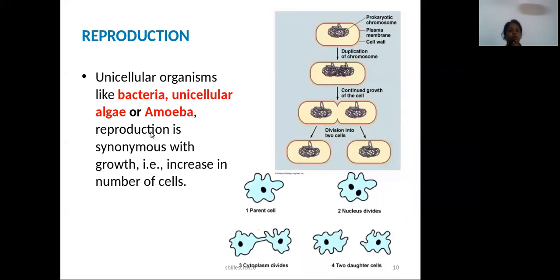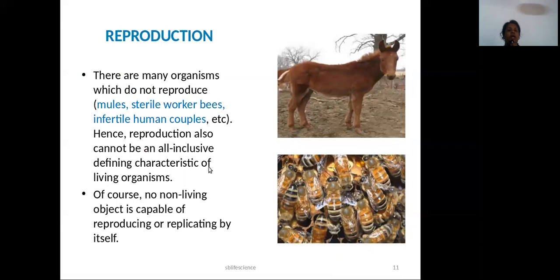Reproduction and growth are related. In unicellular organisms, there is an increase in the number of cells. Growth and reproduction overlap in unicellular organisms. For example, the mule is a hybrid variety — it is a combination that produces worker animals but is sterile and cannot reproduce.